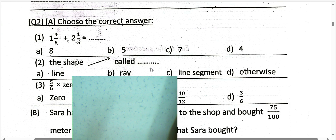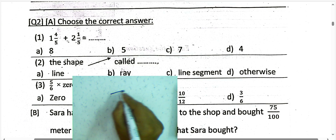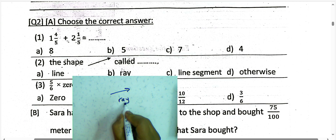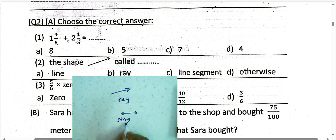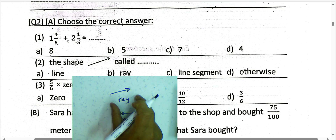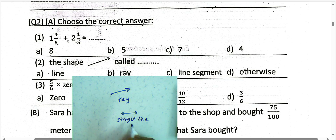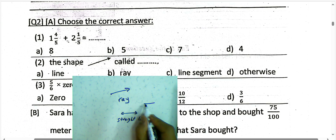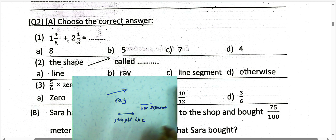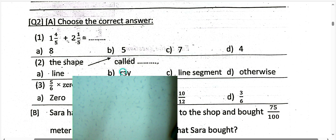Question number 2: this shape we call it a ray — it starts from one point and goes to the end. But this shape we call it a straight line — no end and no start. And we have a line segment, which is a small part. So the result will be letter B: the ray.